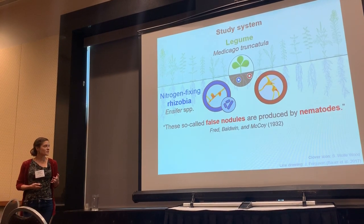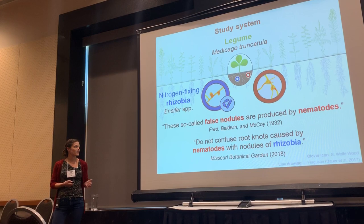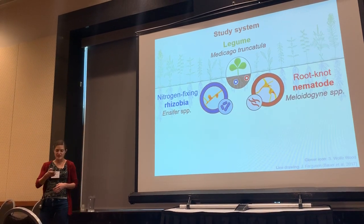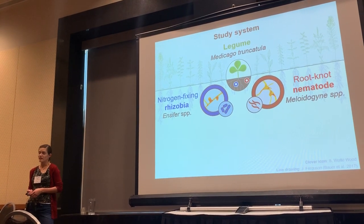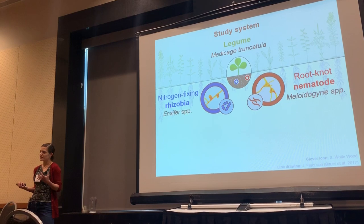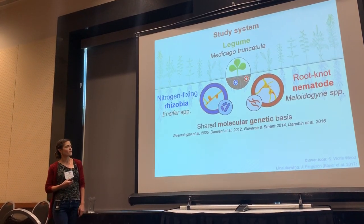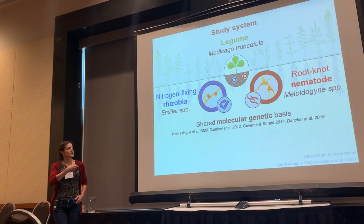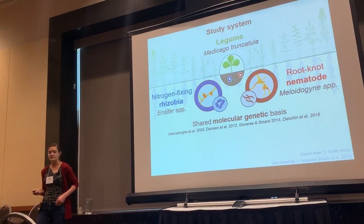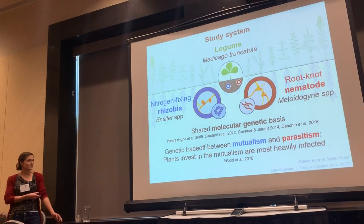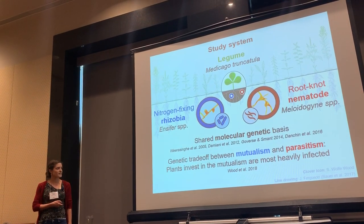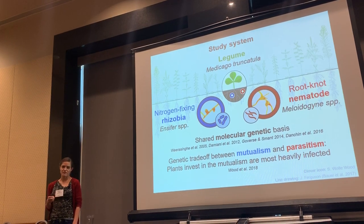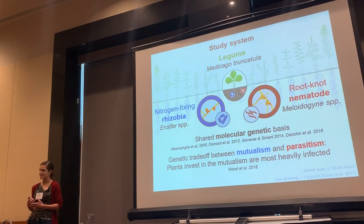These structures look so superficially similar that as recently as 2018, the Missouri Botanical Garden warned gardeners not to confuse root knots caused by nematodes with nodules formed by rhizobia. In my lab, we specifically work on root knot nematodes in the genus Meloidogyne. Studying this tripartite interaction is effective for a couple of reasons: prior work has already shown these interactions have a shared genetic basis — plant genes involved in regulating mutualism are also involved in resisting attack by these parasites. When I was a postdoc with John Stinchcombe at the University of Toronto, I showed there's actually a genetic tradeoff between mutualism and parasitism in wild-collected Medicago truncatula accessions, such that plants that invest in the mutualism are most heavily infected by parasites. We think this is likely ecologically and evolutionarily significant.